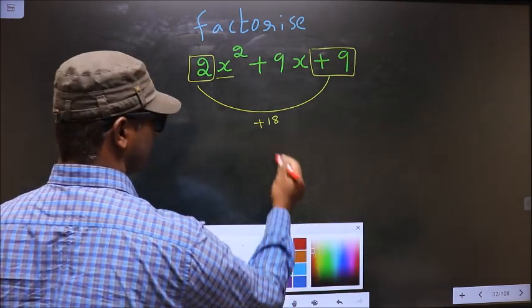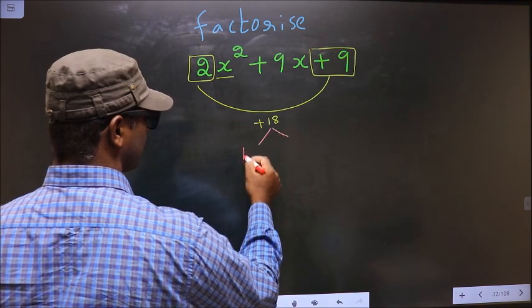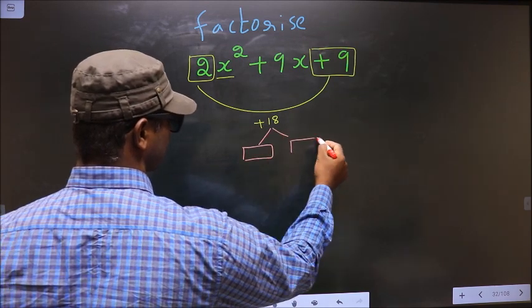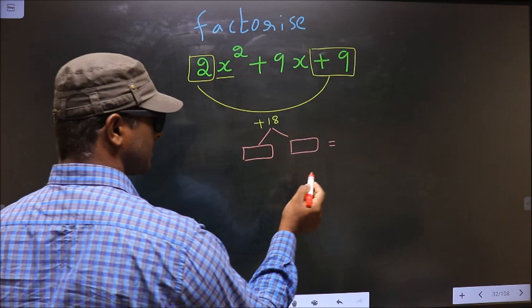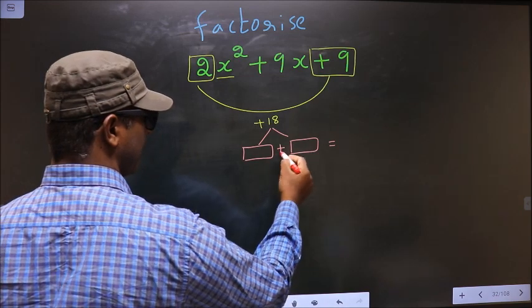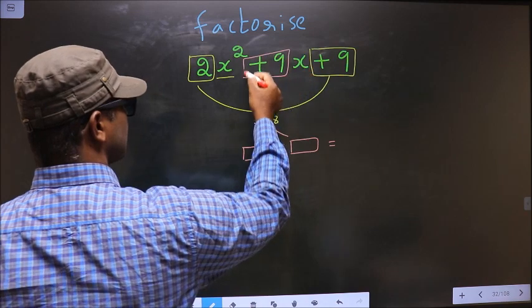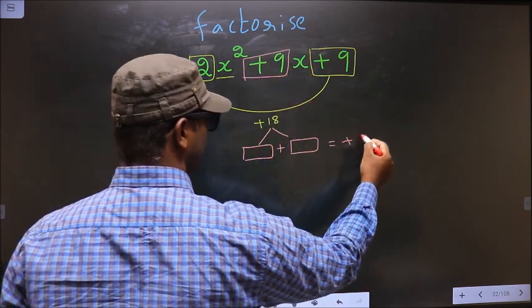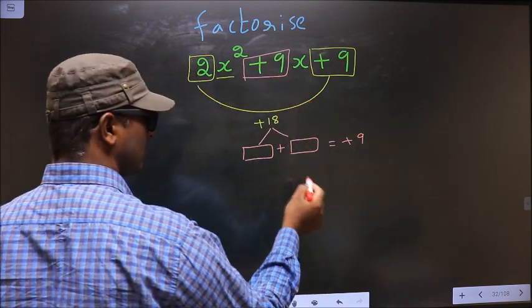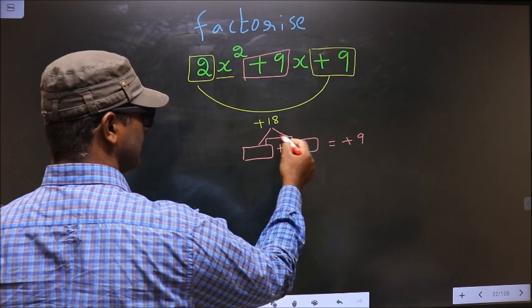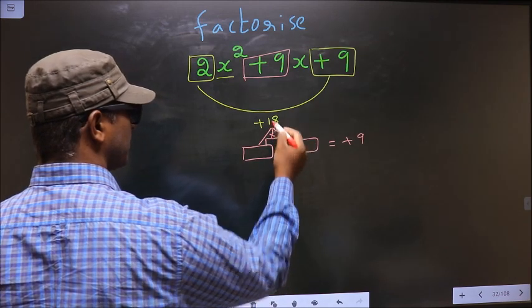Now you should look out for 2 numbers such that when you add these 2 numbers you should get the middle coefficient, that is +9, and also when you multiply these 2 you should get +18.